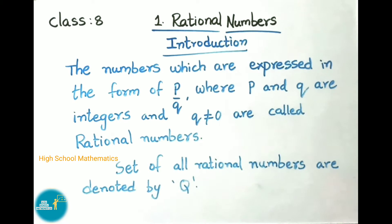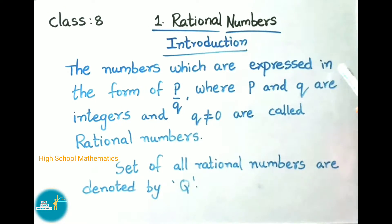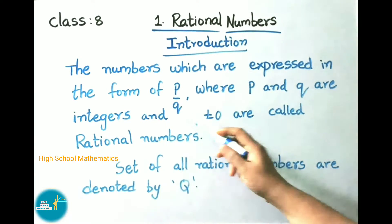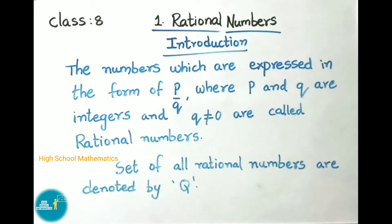Let us see what rational numbers are. The numbers which are expressed in the form of P by Q, where P and Q are integers and Q is not equal to 0, are called rational numbers. The set of all rational numbers is denoted by the capital letter Q. Examples of rational numbers are 1/2, 3/4, -12/18, etc.